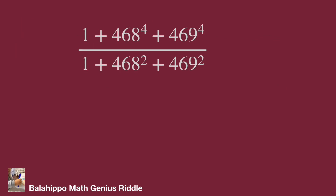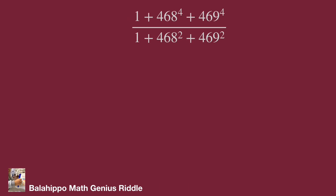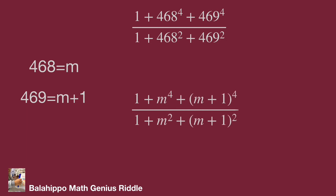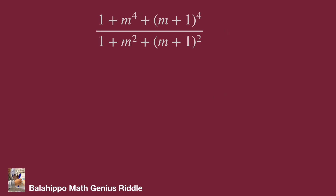In the given fraction, there are 468 and 469 in the numerator and denominator. 468 and 469 differ by one. To calculate easily, let 468 equal m, therefore 469 equals m plus 1. Substitute 468 by m and 469 by m plus 1 into the fraction. Then the expression becomes 1 plus m to the power 4 plus (m+1) to the power 4, over 1 plus m squared plus (m+1) squared. Let's explore these terms.